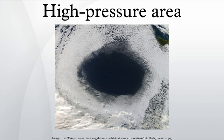A high-pressure area, high or anticyclone, is a region where the atmospheric pressure at the surface of the planet is greater than its surrounding environment. Winds within high-pressure areas flow outward from the higher-pressure areas near their centers towards the lower-pressure areas further from their centers.